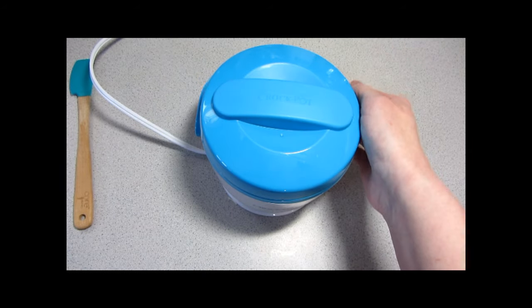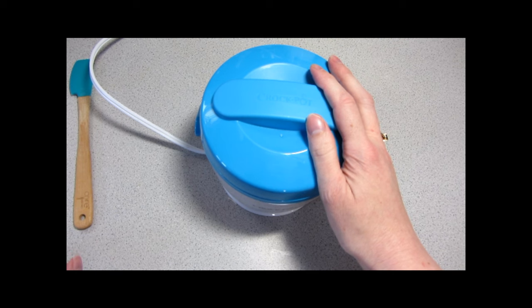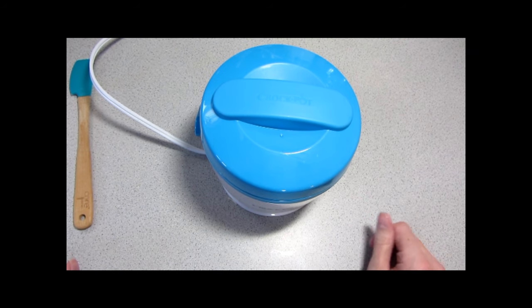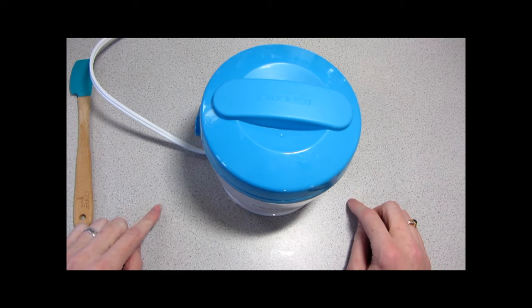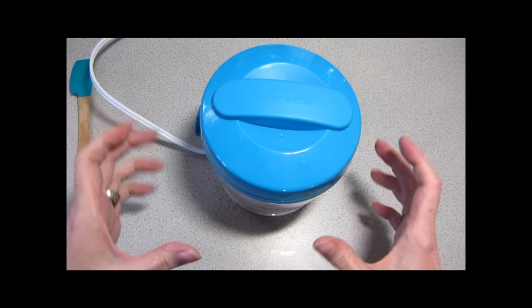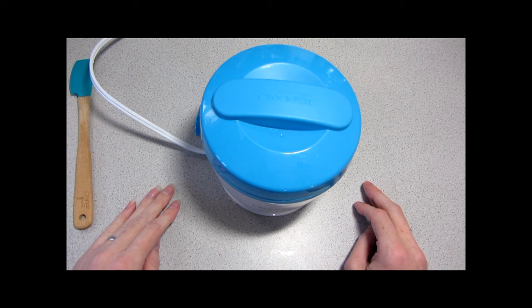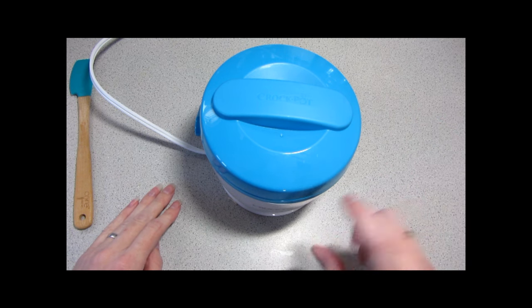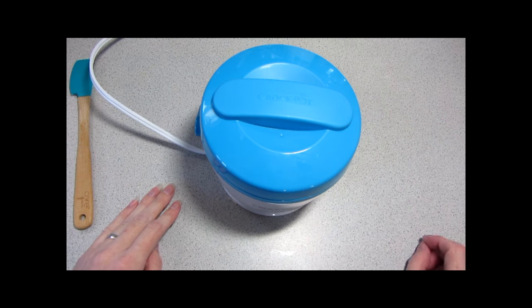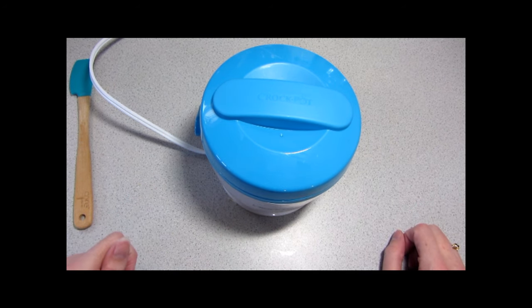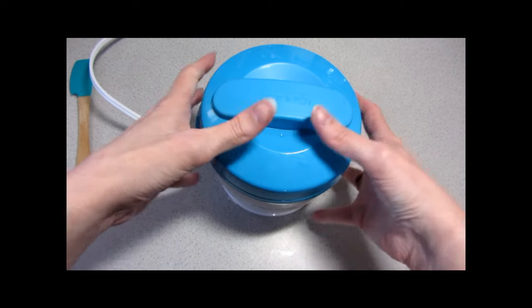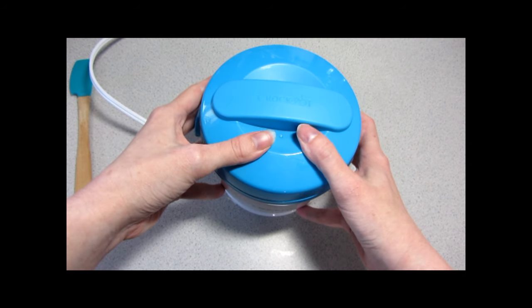One of the benefits of this for people who take their lunch to work is that that inner piece, the silver part, they sell additional inner sections on the crockpot website. And so you can buy several of those and prep your food in advance for the week. Stick it in the fridge and then just take that inner section with you to work and leave this outer section at your workplace.